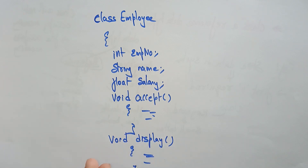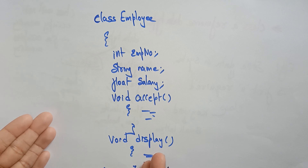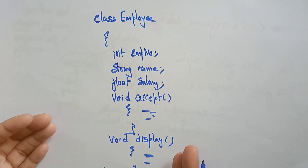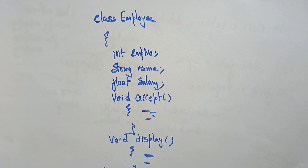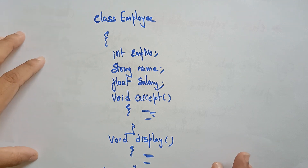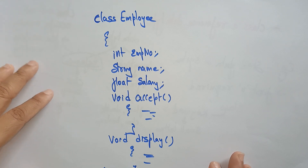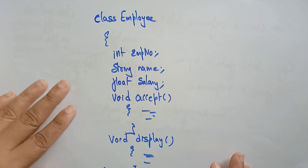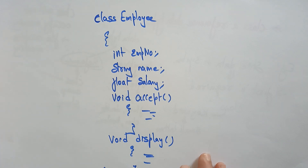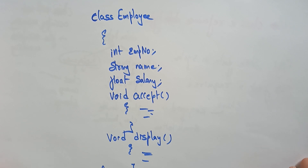In the next video I will explain the object. To store data and occupy memory, an object must be created. With the help of an object, data can be stored, accepted, and displayed. A class is just planning — it doesn't occupy space in memory. When the object is created, then only it occupies memory. We'll see that in the next video.